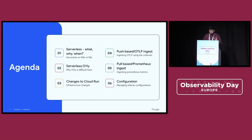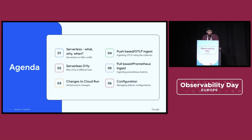This is a quick agenda of what we'll cover. We only have about 25 minutes, so we'll stick to some of the basics. We'll cover serverless briefly. We'll talk about some of the problems with serverless observability. We'll then cover some changes we actually made to Cloud Run itself to accommodate observability. And then we'll talk about its implications on different kinds of telemetry systems, like push-based ones like the OpenTelemetry Collector, pull-based ones like Prometheus, and then we'll talk about how we productionize and configure these agents in the wild.